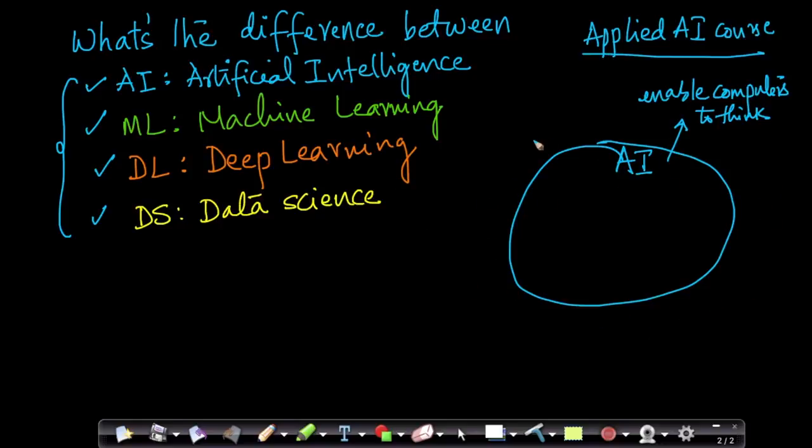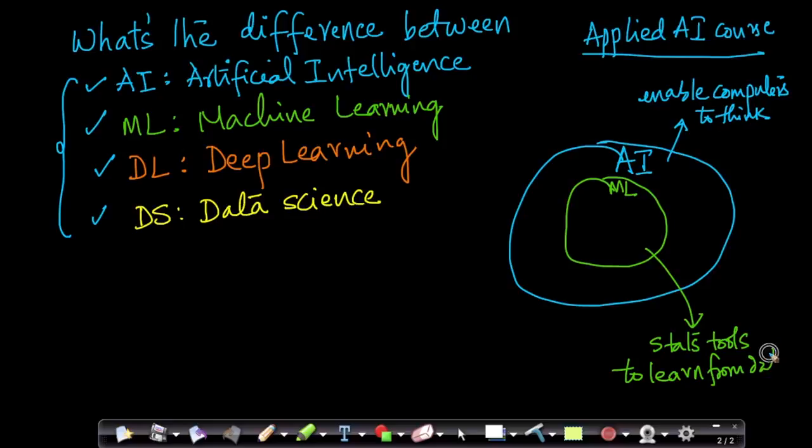Let me show you what machine learning would be. Machine learning is a sub-area in this. Machine learning typically is a bunch of statistical tools. It's basically statistical tools to learn from data. And remember, machine learning here is a subset of AI. It's a part of AI.